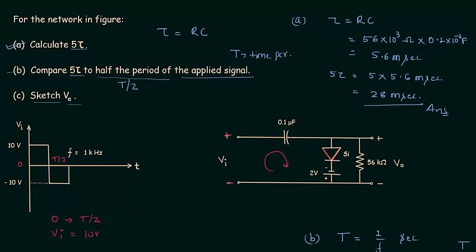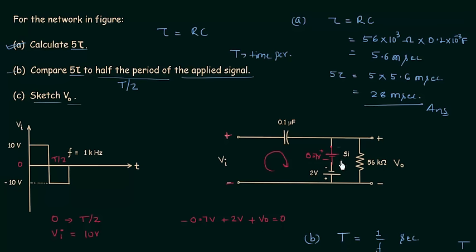We use the constant voltage drop model, in which the forward-biased diode is replaced by its barrier potential of 0.7 volts for a silicon diode. Applying Kirchhoff's voltage law moving in the anti-clockwise direction: minus 0.7 volts plus 2 volts plus Vo equals 0. Solving this, the output voltage Vo equals minus 1.3 volts. This is the output voltage in the first half cycle.